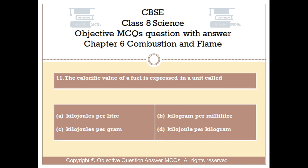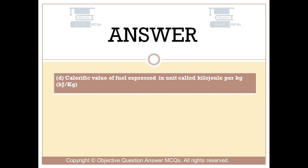Question number 11: The calorific value of a fuel is expressed in a unit called — Option A: kilojoules per liter. Option B: kilogram per milliliter. Option C: kilojoules per gram. Option D: kilojoule per kilogram. The right answer is Option D. Calorific value of fuel is expressed in a unit called kilojoule per kilogram.